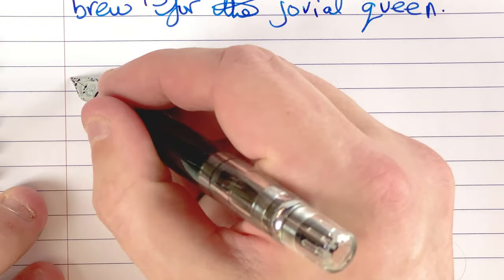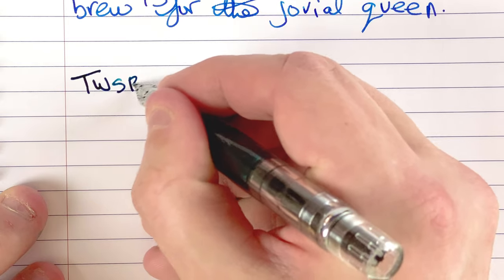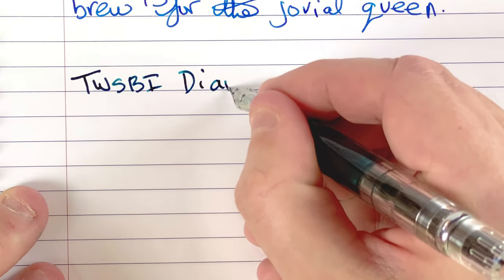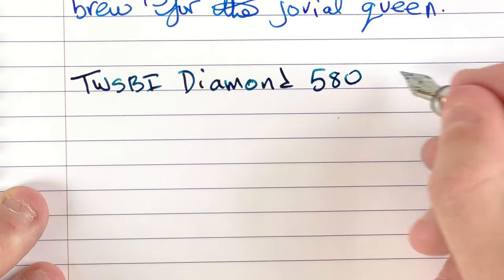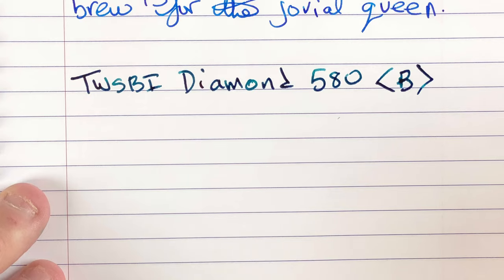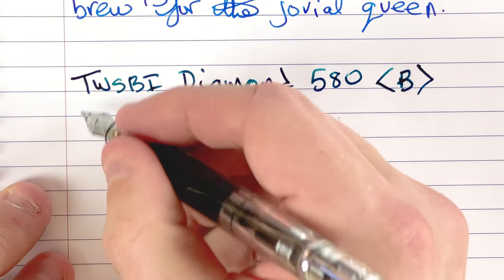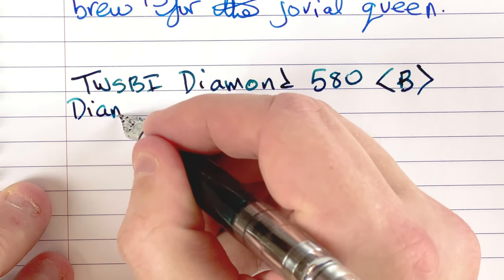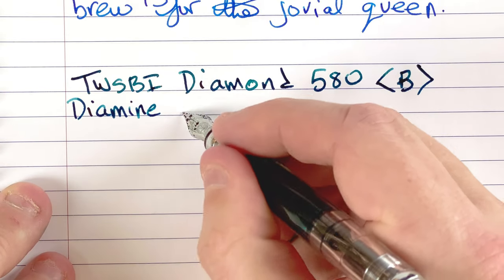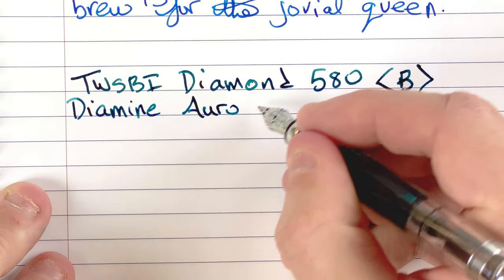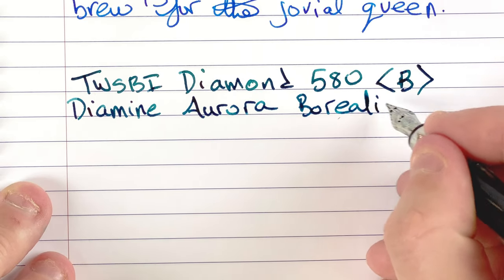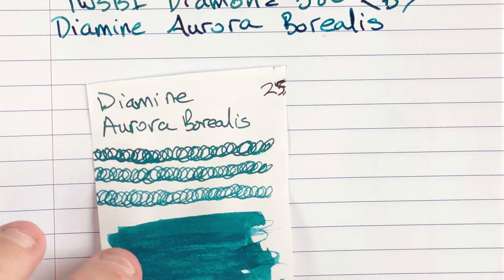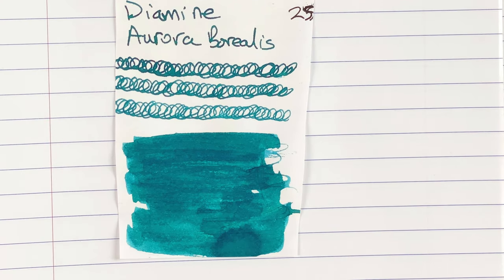So the second pen is a Twisby Diamond 580. This has got a broad nib. The ink in here is by Diamine and it's called Aurora Borealis. Now, I've only had this ink a few weeks. And it's very quickly becoming a favorite color.